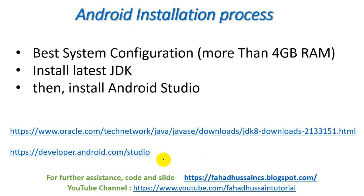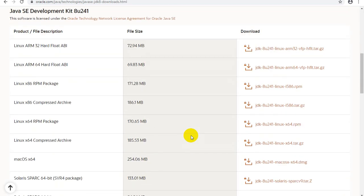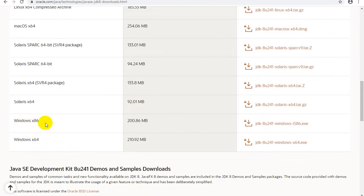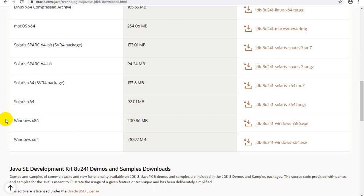Now we will move to downloading and installing Android. There are two links. First is the Oracle SDK, where you can install different SDK versions. The second is Android Studio, available at developer.android.com/studio. I am currently on the Oracle site where you can download the latest JDK. There are different versions available for Linux, macOS, or Windows 64-bit — you can download whichever you are using and install it.